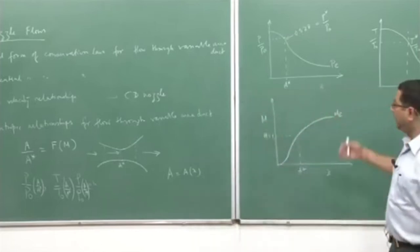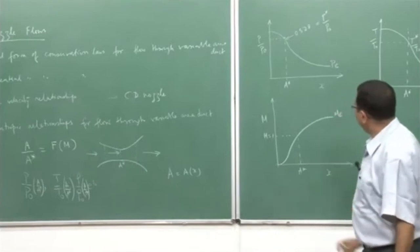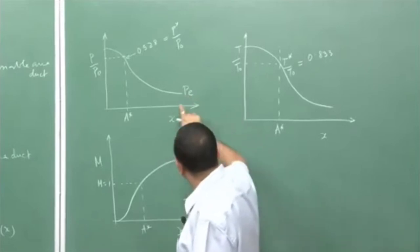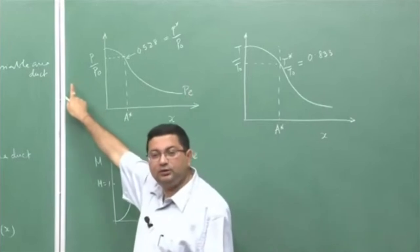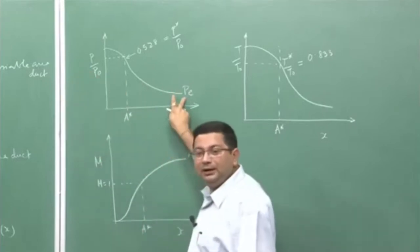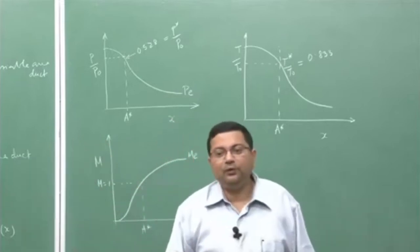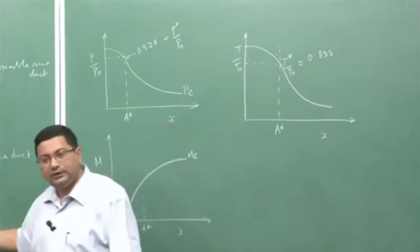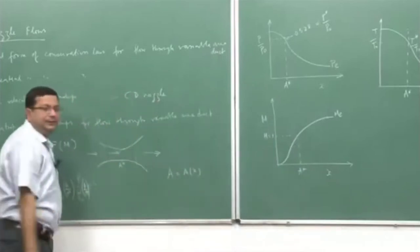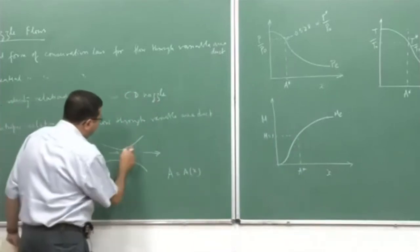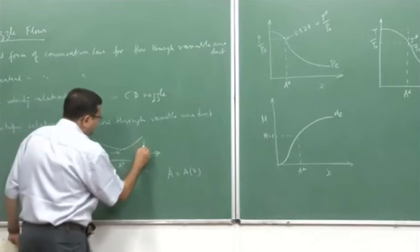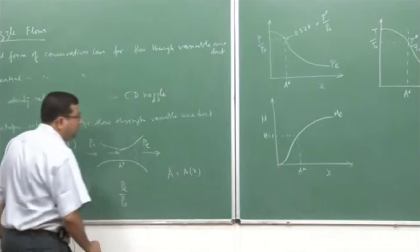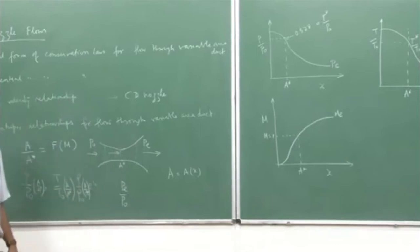Now, to take this forward, there is a given exit pressure p_e. In order for this flow to be established, we need this exit pressure corresponding to this inlet pressure. So p₀ and p_e are going to dictate what kind of flow we are going to have. The pressure ratio p_e/p₀ will dictate what flow we get at the exit.